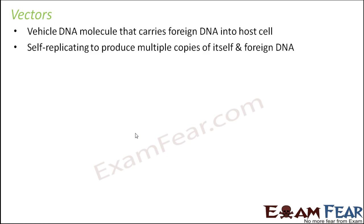Vectors are plasmid DNA molecules which are self-replicating, so that they can produce multiple copies of themselves and of the foreign DNA. It is very important that the foreign DNA is linked to the vector in such a way that whenever the vector replicates — that is, whenever the plasmid DNA replicates — the foreign DNA also replicates itself. So the vector should have certain features so that the foreign DNA, when linked to it, is able to replicate itself.